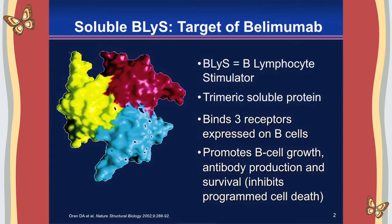BLyS can bind to one of three receptors only on B-cells, and when BLyS binds to the receptor, it induces its biological activity, which is to promote B-cell growth and differentiation — meaning replication. The cells either become antibody-producing cells or auto-antibody-producing cells, and BLyS is also important in the survival of those cells. The cells can also become memory B-cells, which remember encounters like vaccinations or infectious agents.